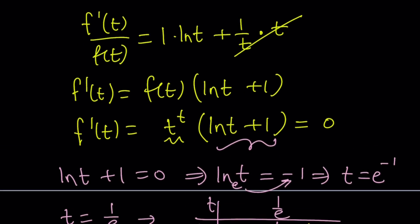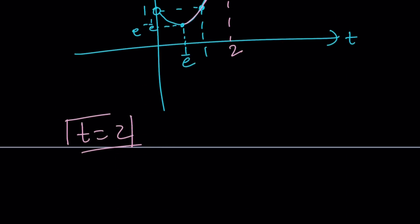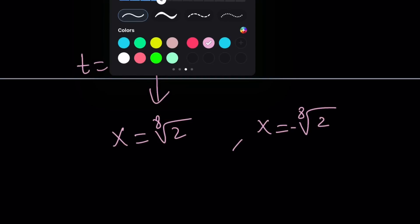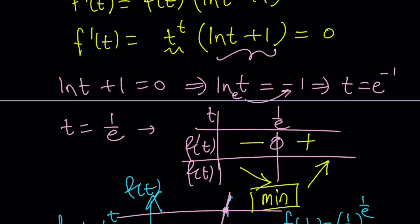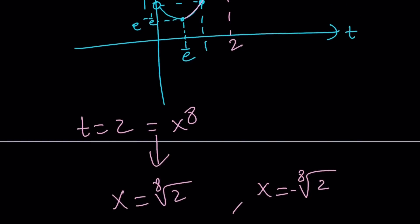But what is t? t is x to the 8th power. Let's go ahead and set this equal to x to the 8th power. And we're going to go from there. This is x to the 8th. And as you know, this has two solutions. x is equal to the 8th root of 2. And x equals the 8th root of 2, but with a negative sign in front of it. Obviously, there are two solutions for x. And you can go ahead and check them here, because you're going to have a positive base and a positive exponent. So it's going to work fine. And those are going to be the solutions.